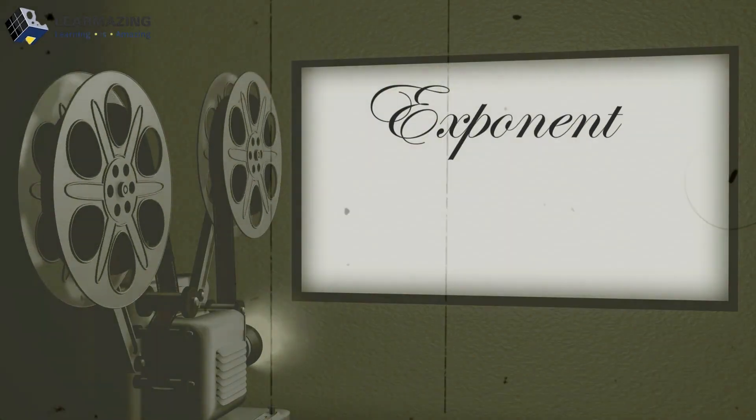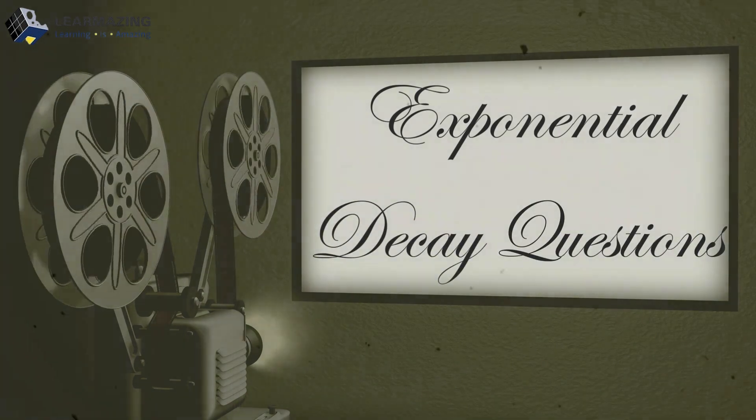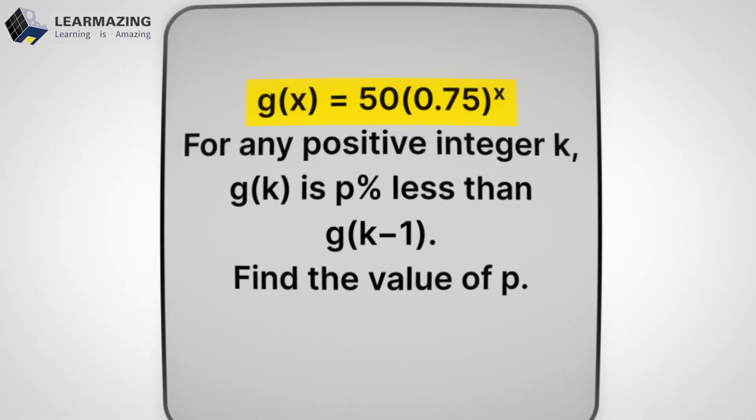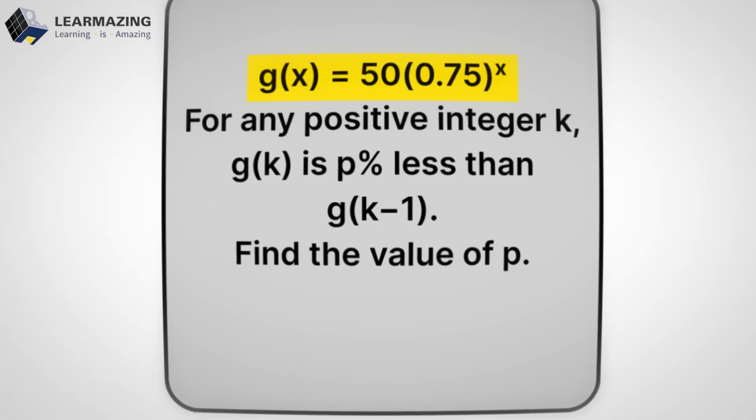Here's something most students completely miss. Exponential decay problems don't have to be scary. In fact, with Desmos, you can solve this in under 15 seconds. No messy algebra, no guessing. Think about it. Some students see f(x) = 50 × 0.75^x.